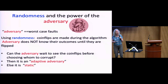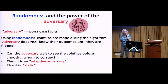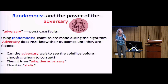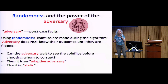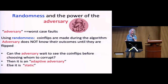We use the word adversary to model worst-case faults. For randomized algorithms, we assume that the adversary doesn't know the outcome of a coin flip until it's flipped. If the adversary knew about the coin flips before they were flipped, it would effectively be a deterministic algorithm — once the coin flip settings are known, there's one fixed algorithm and the adversary would know it. So faults don't depend on the randomness until the coins are actually flipped.